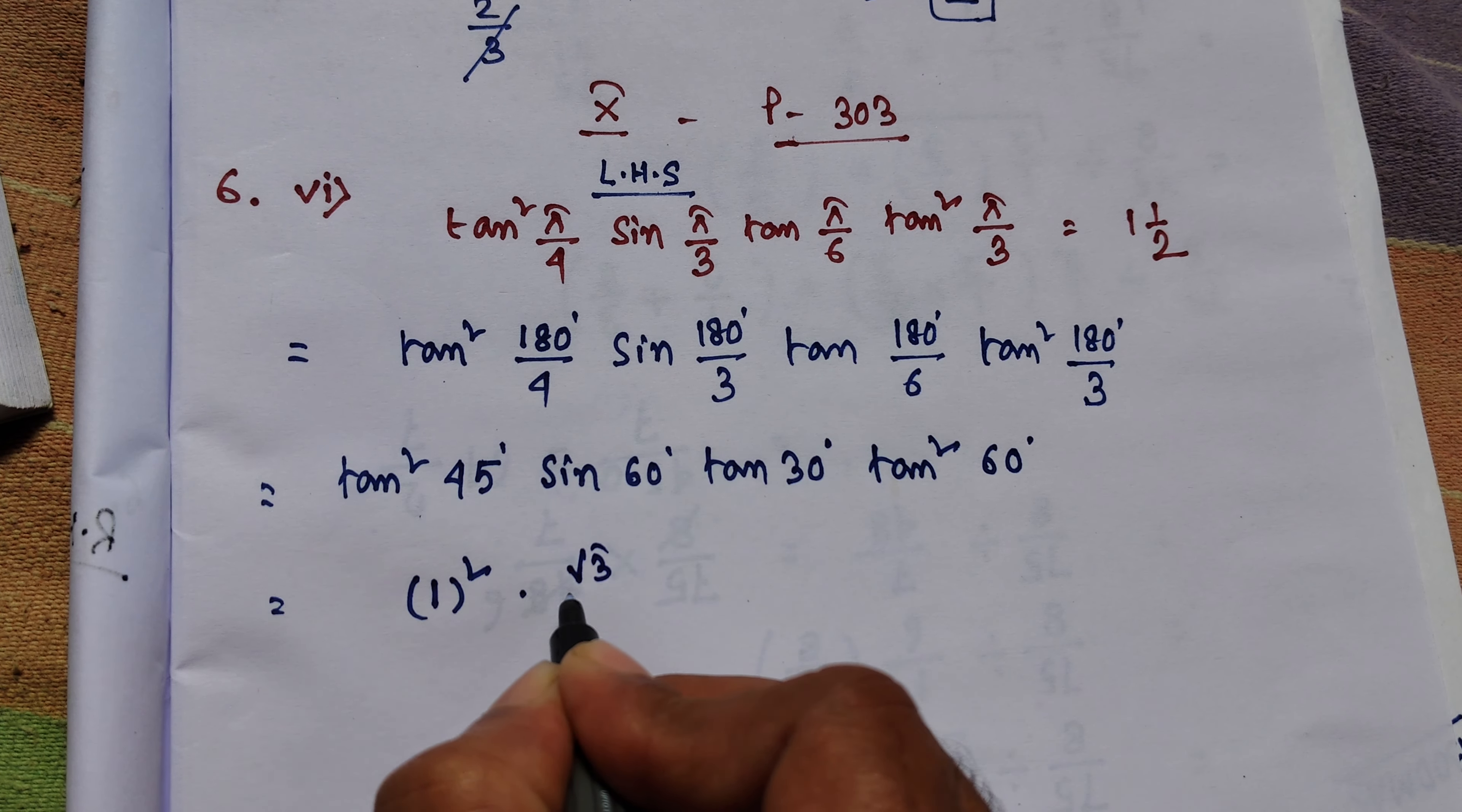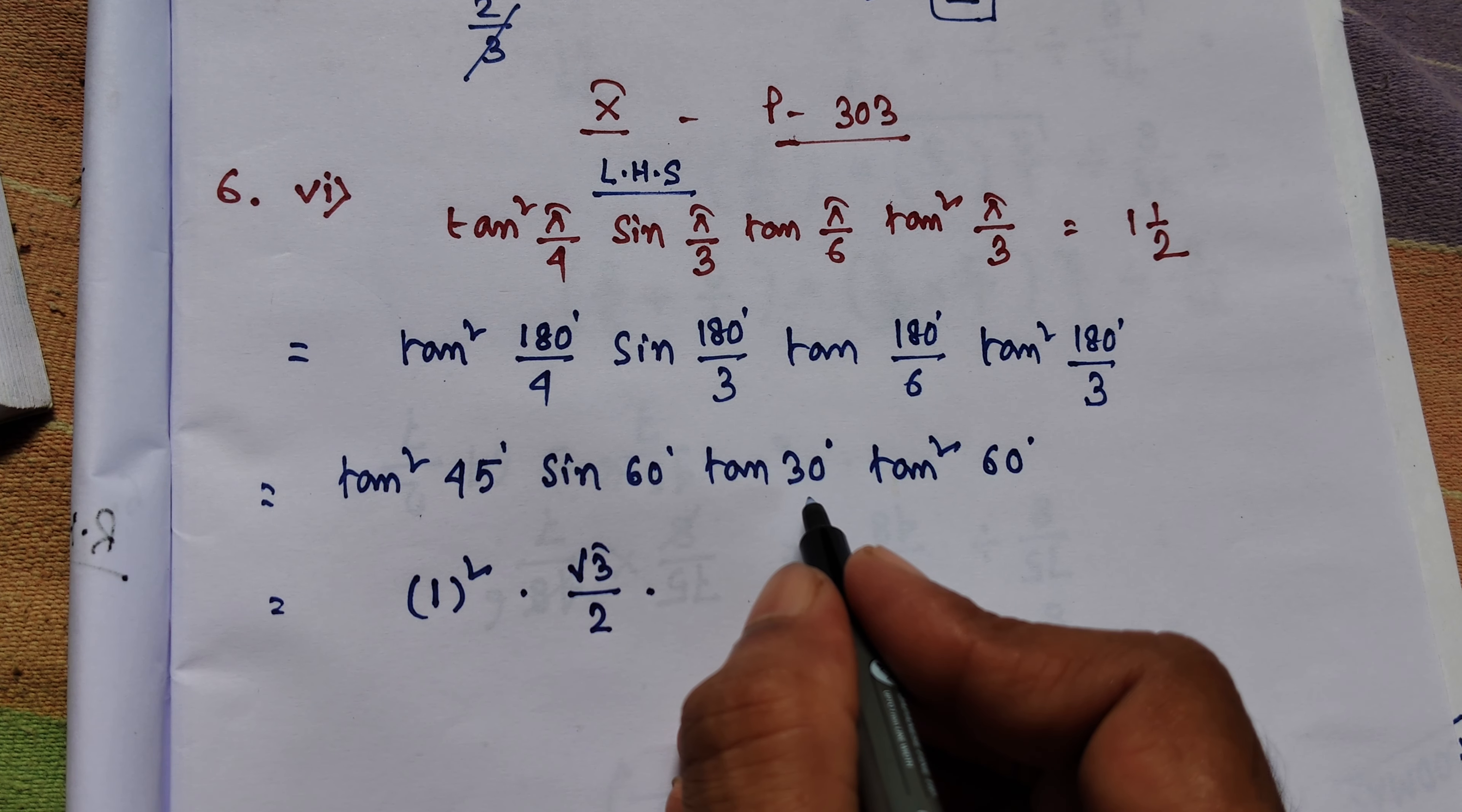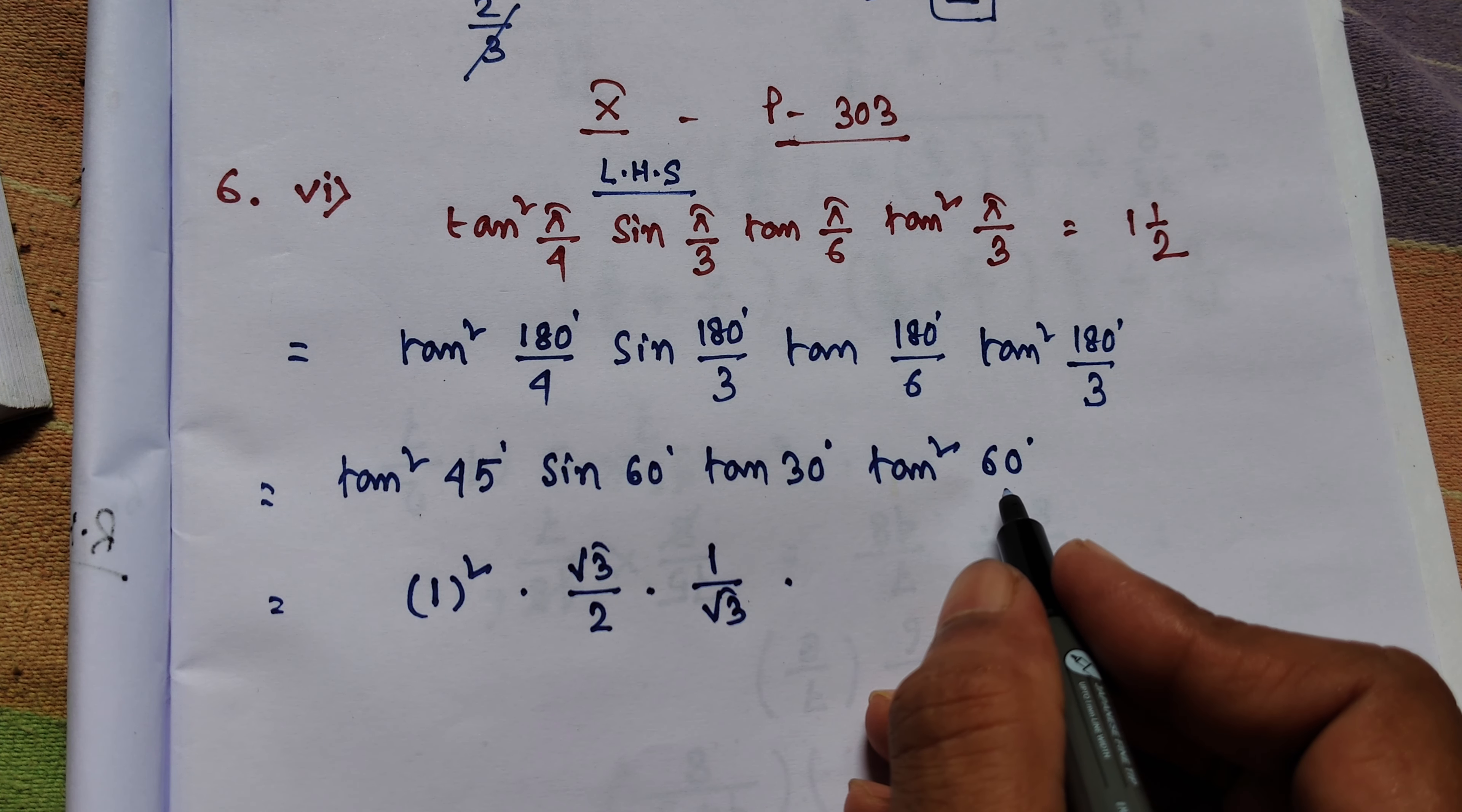Tan 30 degrees is equal to 1 by root 3. And tan squared is equal to 60 degrees. Tan 60 degrees is equal to root 3.